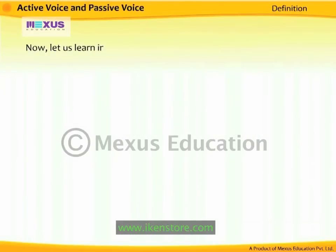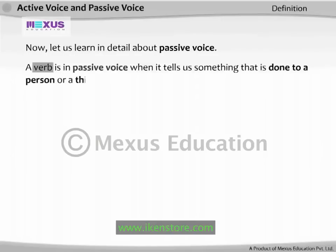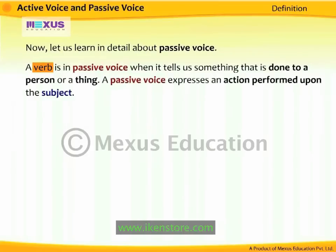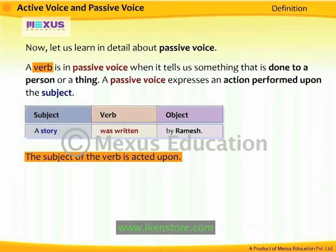A verb is in passive voice when it tells us something that is done to a person or a thing. A passive voice expresses an action performed upon the subject. For example, 'A story was written by Ramesh.' The action of writing is performed upon the subject 'story.' The subject of the verb is acted upon, and the object is the doer of the action.